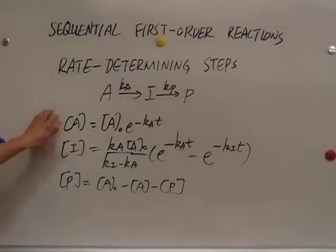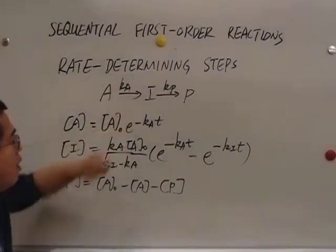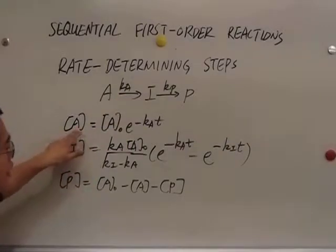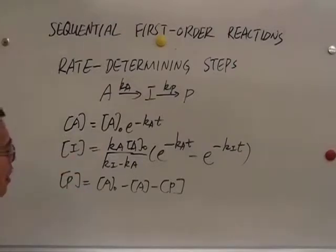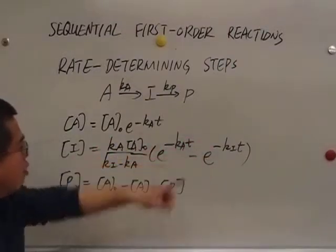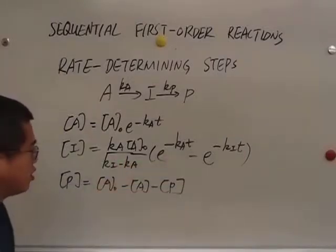A is very simple because A is involved in only one elementary step and the concentration of A decays exponentially. The expression of I is really complicated and mathematically we can solve the differential equation for I and we've got this expression here.